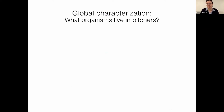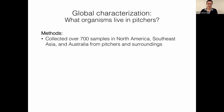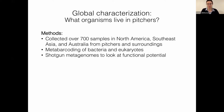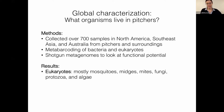This experiment started by trying to understand what organisms live in the pitchers. While this was relatively well known for insects, it was not well known at the microbial level. Over 700 samples were collected in North America, Southeast Asia, and Australia from pitcher plants and their surroundings — bog water and surrounding soil. Metabarcoding of bacteria and eukaryotes was done, and shotgun metagenomes from a subset of samples assessed overall functional potential. For eukaryotes, it's mostly specialized mosquitoes, midges, mites, fungi, protozoa, and algae.